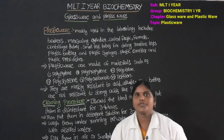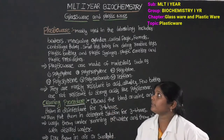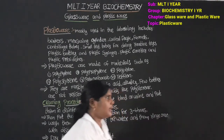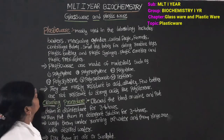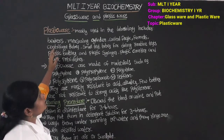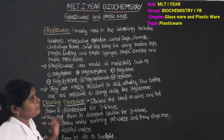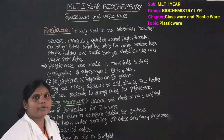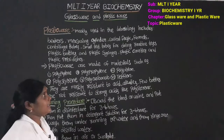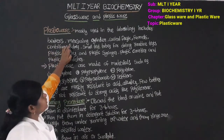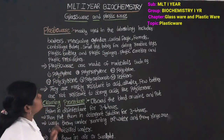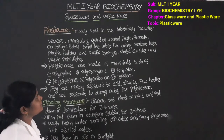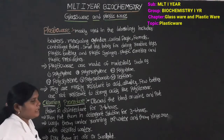The next topic is Plasticware. Plasticware mostly used in the laboratory includes: conical flask, funnel, centrifuge tubes, small test tubes for doing routine tests, plastic bottles, plastic syringes, plastic cuvettes, and plastic petri dishes.